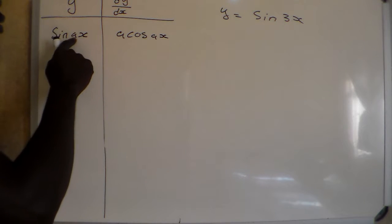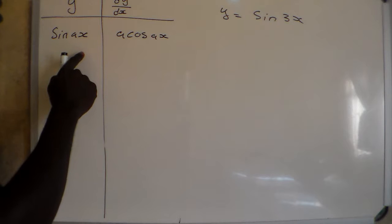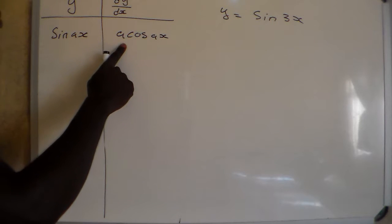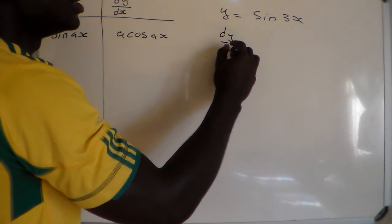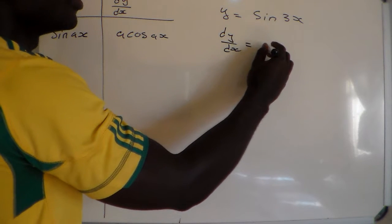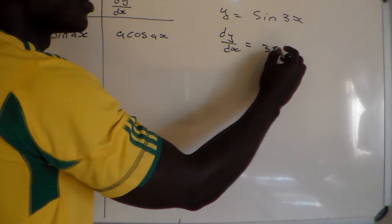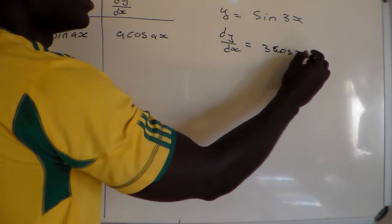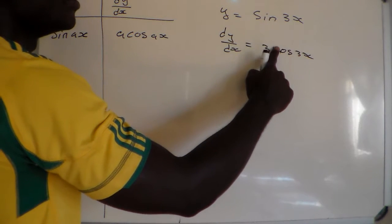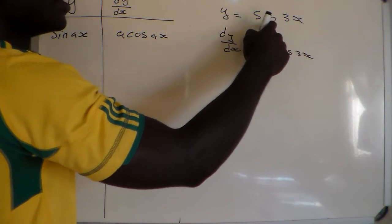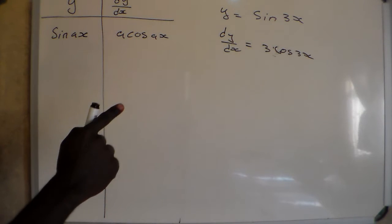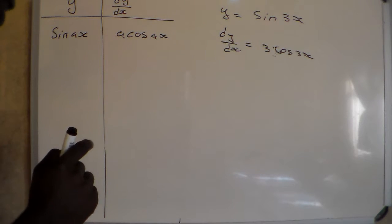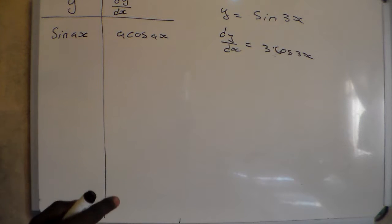So if we have a constant number, we multiply by the constant number. For example, if Y equals sine 3X, then dY/dX will be equal to 3·cos(3X). So the derivative of sine 3X is equal to 3·cos(3X).